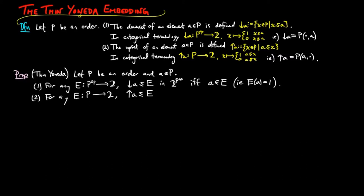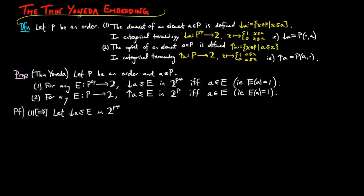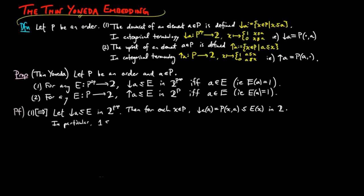For the proof of 1 in the forward direction, let the lower segment on a be less than or equal to e in the functor category of p^op to 2. Then for each x in p, the lower segment on a evaluated on x equals the hom-set p(x, a), which is less than or equal to e evaluated on x in 2. In particular, 1 equals the hom-set p(a, a) is less than or equal to e on a. Therefore, a is in e.